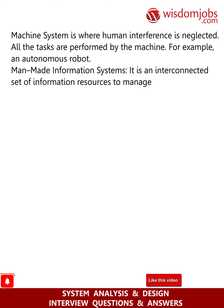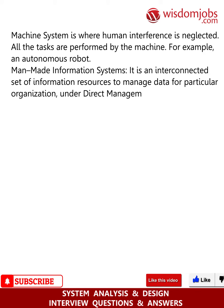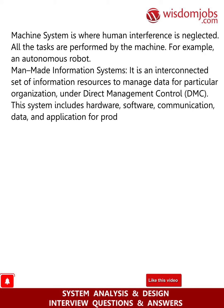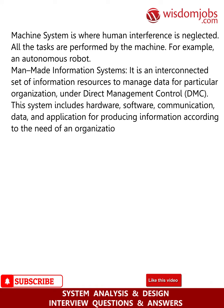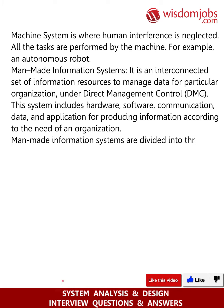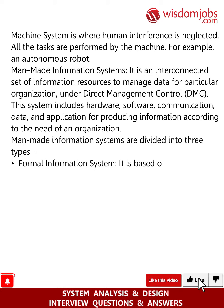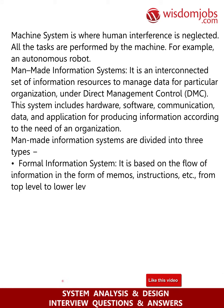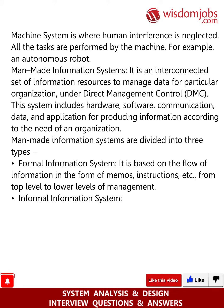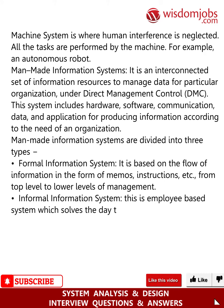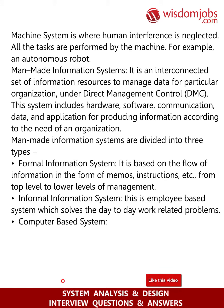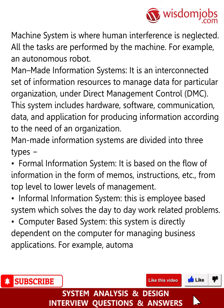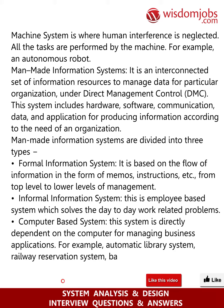Man-made information systems: it is an interconnected set of information resources to manage data for a particular organization under direct management control (DMC). This system includes hardware, software, communication, data, and applications for producing information according to the needs of an organization. Man-made information systems are divided into three types: formal information system, based on the flow of information such as management memos and instructions from top to lower levels of management; informal information system, an employee-based system which solves day-to-day work-related problems; and computer-based system, directly dependent on the computer for managing business applications, for example automatic library system, railway reservation system, and banking system.